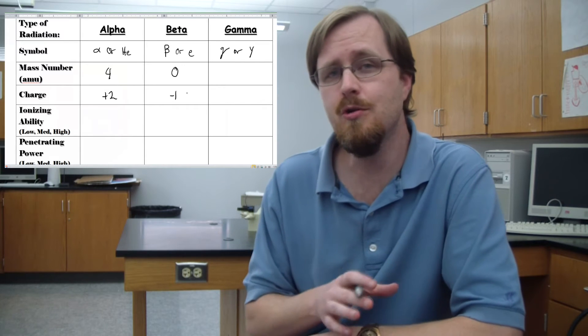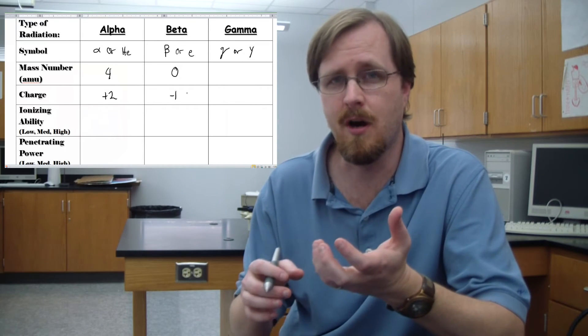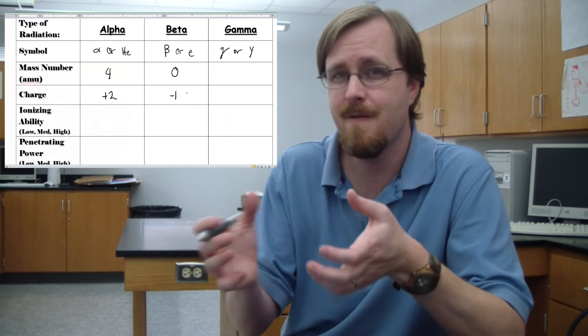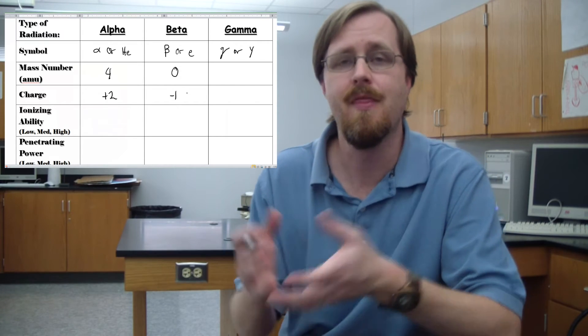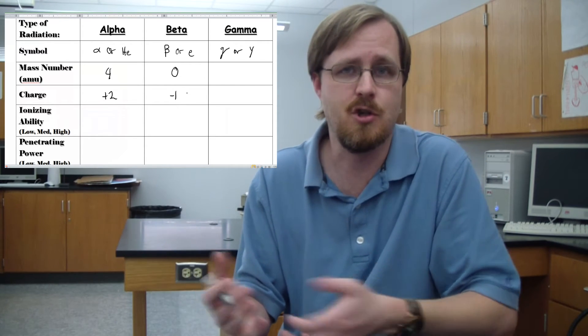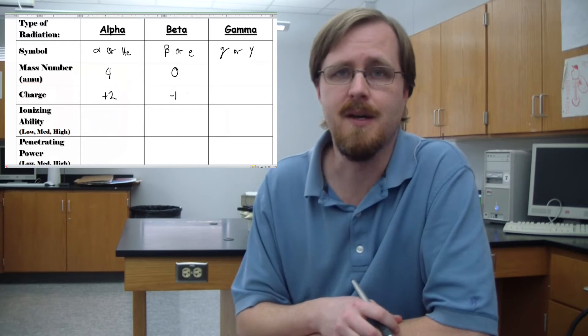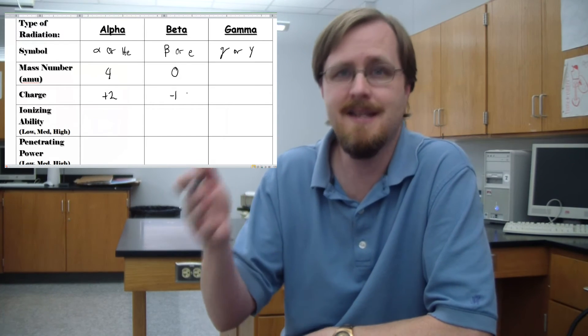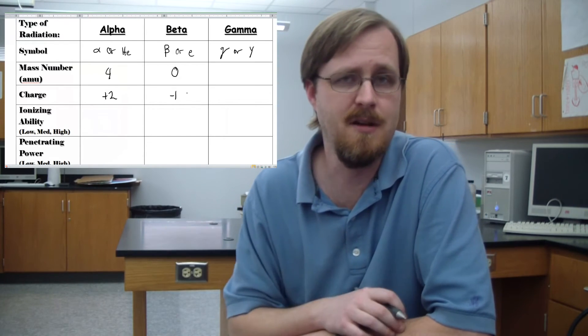Because as you see, the neutron is a proton and an electron fused together. That's why it has a charge of zero, because it's a positive charge and a negative charge together, balancing out to be a zero.